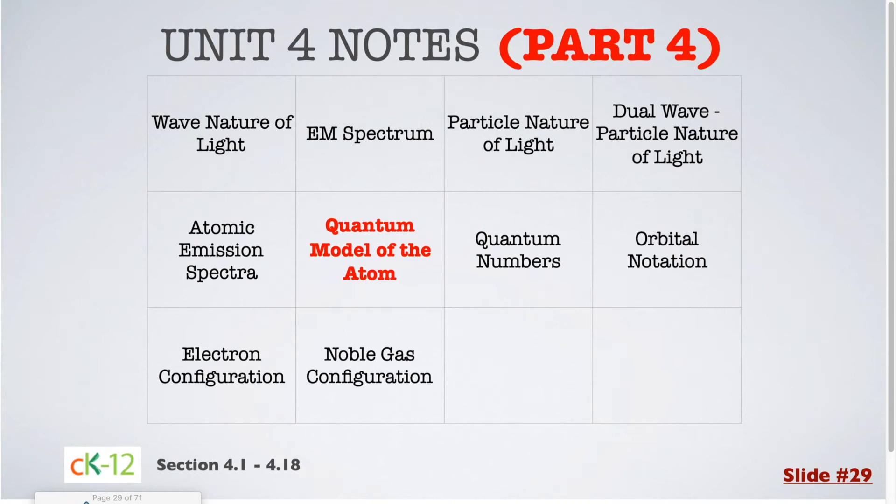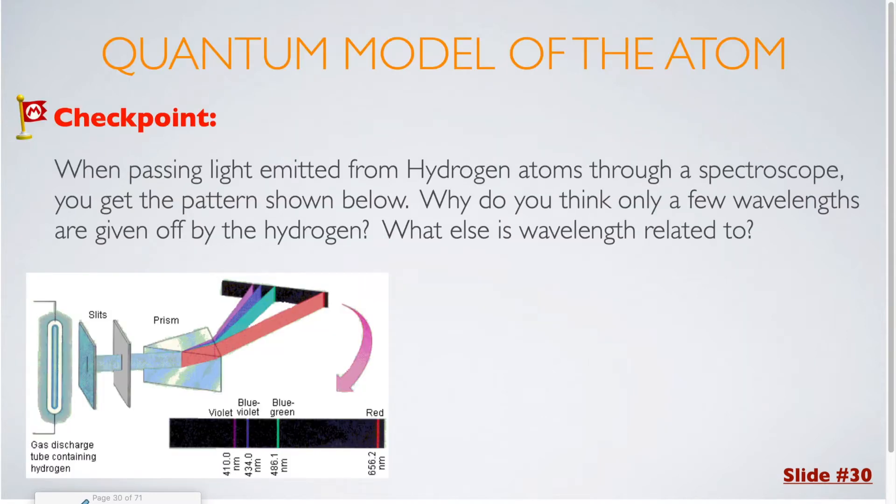In part 4 of the Unit 4 notes, we will be covering the quantum model of the atom. When passing light emitted from hydrogen atoms through a spectroscope, you get the pattern shown below. Why do you think only a few wavelengths are given off by the hydrogen? What else is wavelength related to?